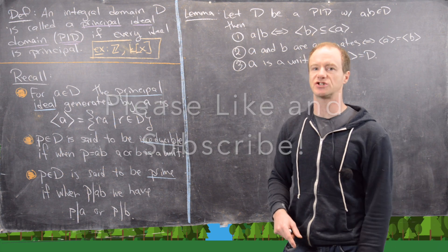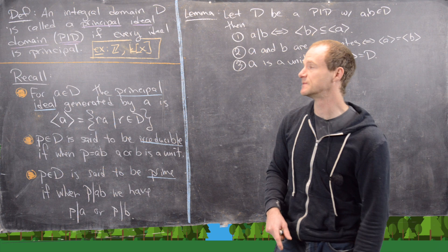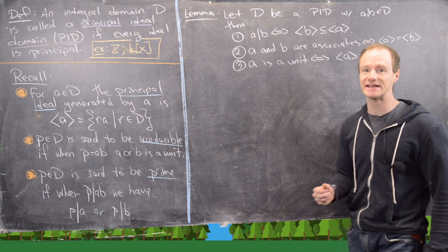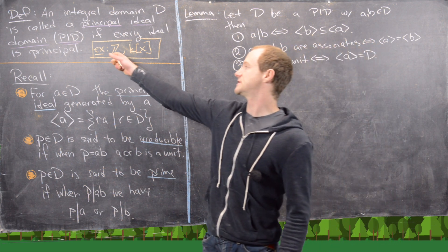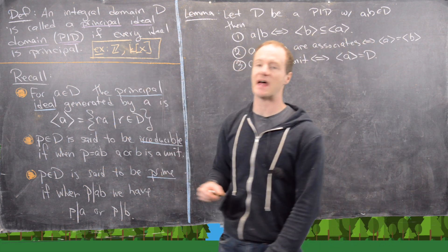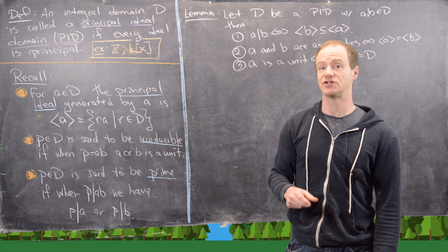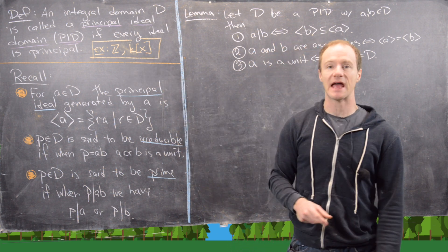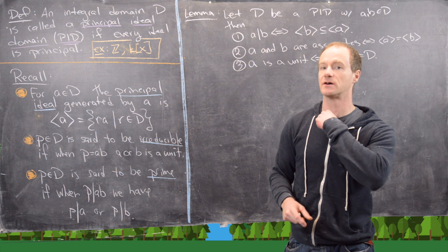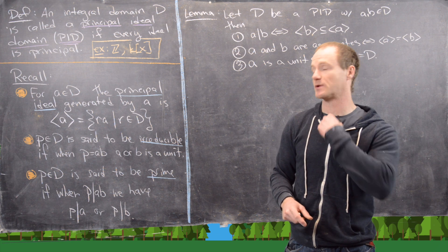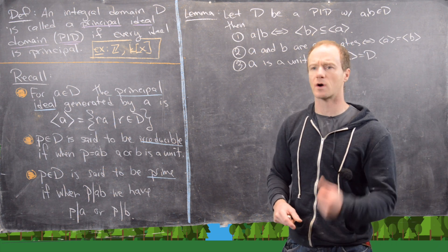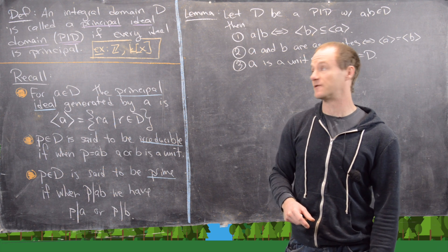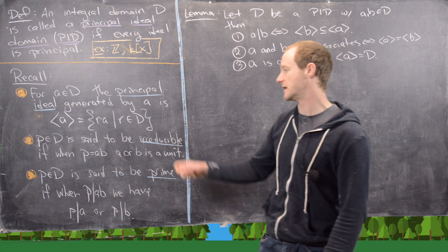We proved a couple of special cases before on this channel. In particular, we proved that the ring of integers is a PID, and also that k[x], where k is a field, is a principal ideal domain. In other words, the ring of polynomials with coefficients in a field is a PID.